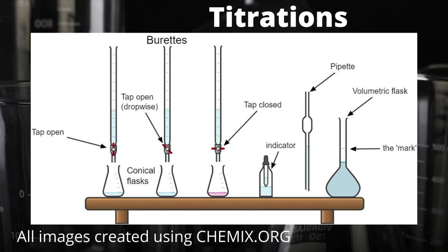You've also got to be very careful with how you swirl the solution in the conical flask, because you want to make sure you're mixing the solution as you're adding it dropwise from the burette, but you don't want to splash solution up the sides of the conical flask as that will move your reagents out of the reaction. The final piece of apparatus is the volumetric flask shown on the right-hand side. The volumetric flask is used to prepare a standard solution — a solution that has a known concentration — and we prepare these by dissolving a known mass of a substance in enough deionized water to make a known volume of solution in the volumetric flask.